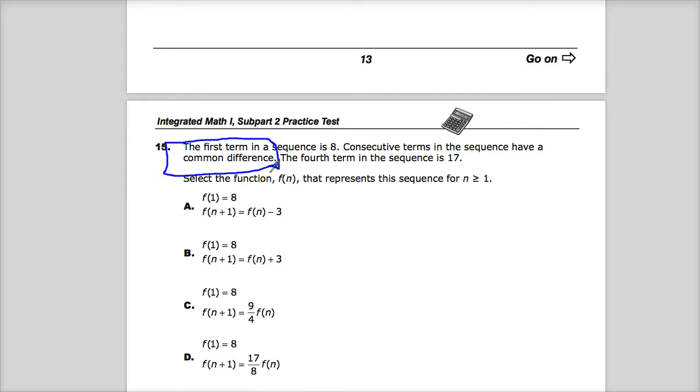Common difference means that if I take one term that's further along in the sequence and subtract the one before it, each time that amount should be the same. Common, and the difference comes from it's a change. It'll tell you how much the thing increases or decreases each time.